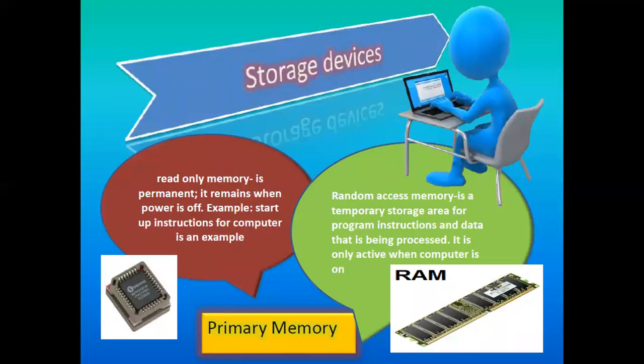Storage devices include read-only memory (ROM), which is permanent and remains when the power is off — startup instructions for the computer are an example. Random access memory (RAM) is a temporary storage area for program instructions and data being processed; it is only active when the computer is on. These two are primary memory. If you want your computer to run fast, the most common thing to do is increase your RAM, because with greater memory it can process much more data.